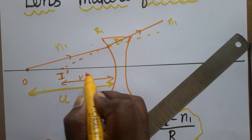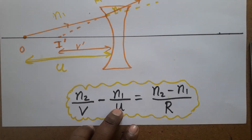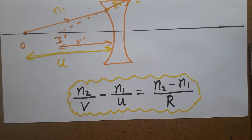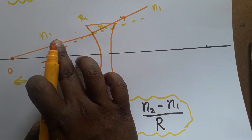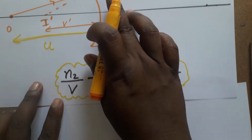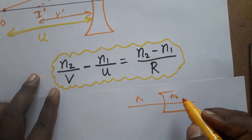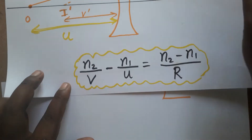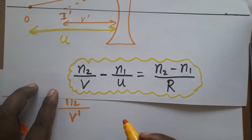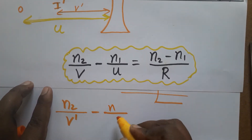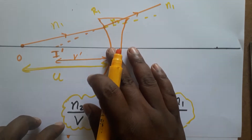The image distance is taken as v dash. Now for the first equation, we use the general refraction equation at a concave surface. The first medium is n1 and the second medium is n2. So the first equation is: n2 divided by v dash minus n1 divided by u is equal to n2 minus n1 divided by R1. This applies to the refraction at the first surface.